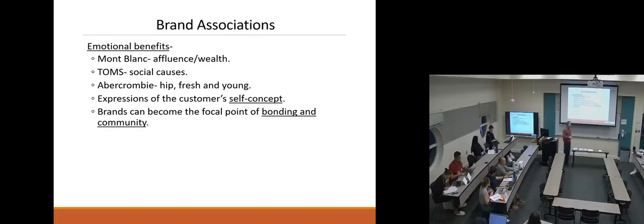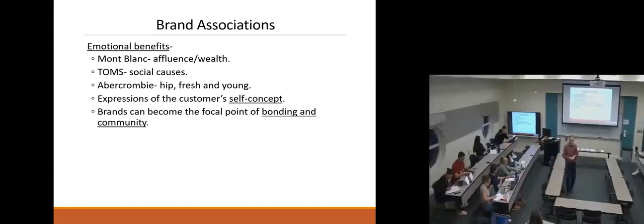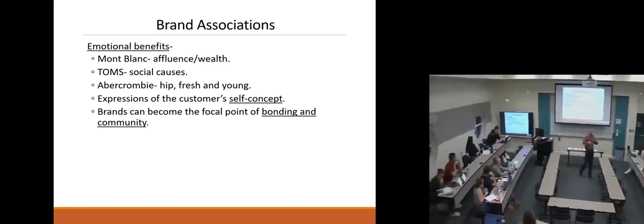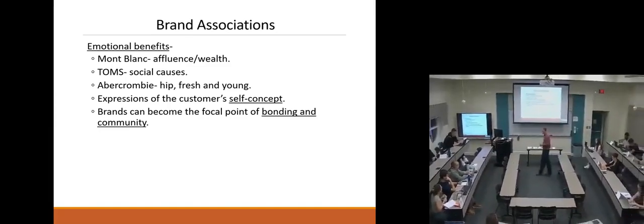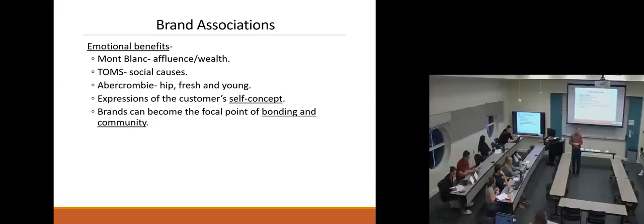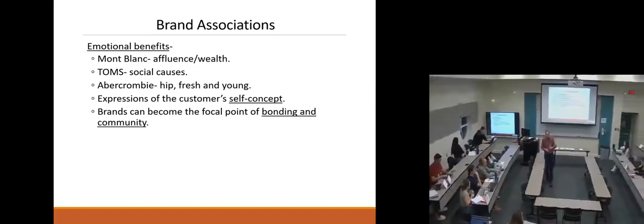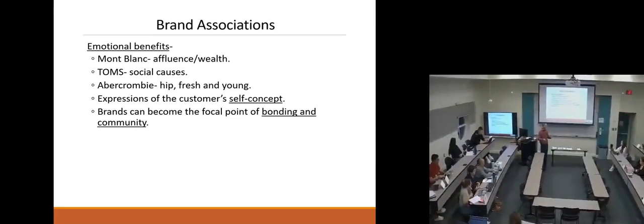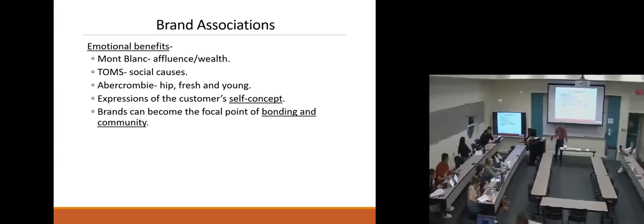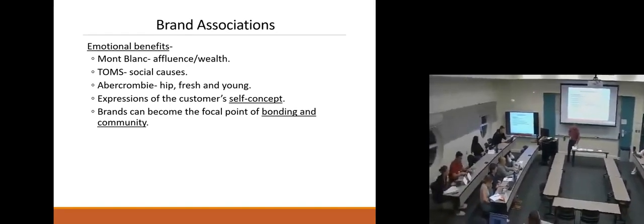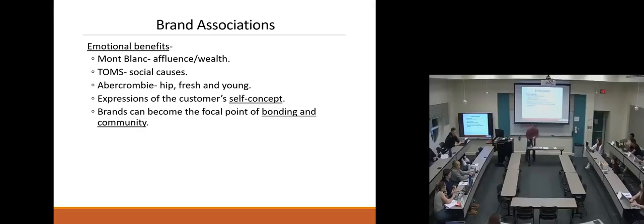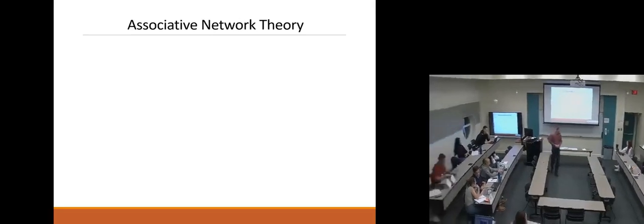Emotional benefits would be a third type of big category here, and these are probably some of the most important. We want an emotional bond — what exactly gets triggered when you see a logo? Is it warm feelings? A sense of confidence? Ruggedness? A personality trait? When people hear your brand, what do they associate? What do they connect with? This whole associative network theory is based on the idea that associations are made. Can we always control what those feelings are? Not always — we have to let the customer make those associations.